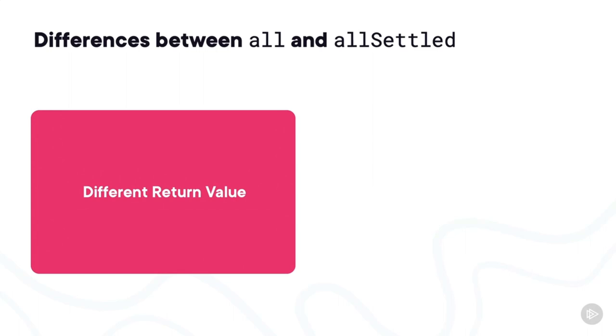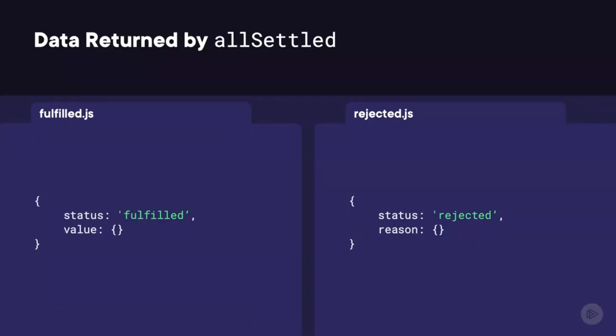allSettled is similar to all but different enough to explain further. First, the data passed back is different. All returns a results object as part of an array, but allSettled returns a different shape — for each object there are two keys. The status key will be either fulfilled or rejected, and the second key will be either value (if the status is fulfilled) or reason (if the status is rejected). That is, the then function on allSettled will return all promises even if they're rejected.